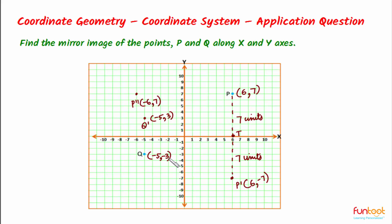Now let's find the mirror image of Q along the Y axis. The Y coordinate remains the same as −3, and the X coordinate becomes the negative of itself — the negative of −5 is +5. So the coordinates of the image will be (5, −3). This point we can call Q″ with coordinates (5, −3), and it is the mirror image of Q along the Y axis.